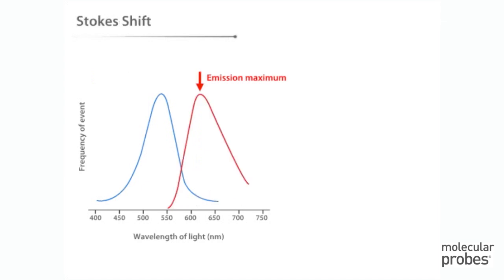Notice that the emission maximum for the fluorophore is always at a longer wavelength, that is, has lower energy than the excitation maximum. This difference between the excitation and emission maxima is called the Stokes shift. The magnitude of the Stokes shift is determined by the electronic structure of the fluorophore and is a characteristic of the fluorophore molecule.